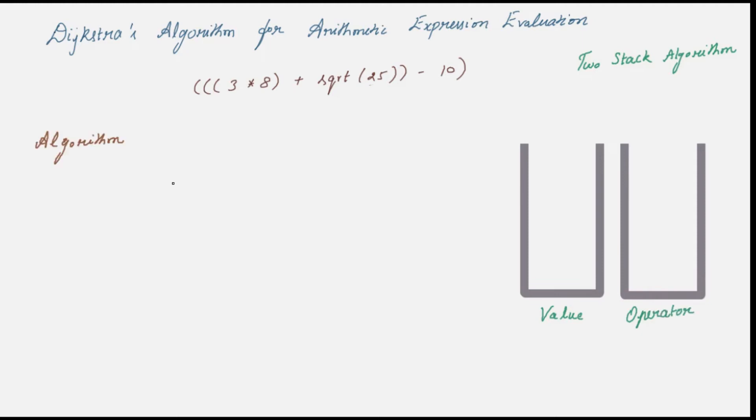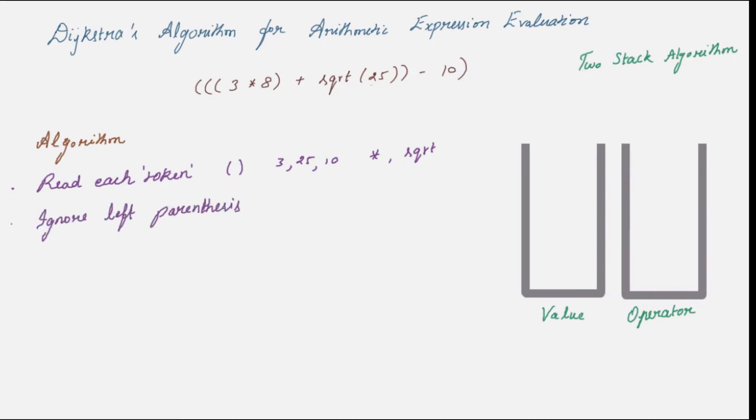Let's see the logic behind the algorithm. Read each token in the input expression. Here by token we mean each of the entries. It could either be the parenthesis left or right, or it could be any numerical value like 3, 25, or 10, or it could even be the operators like multiplication symbol or square root. While you read each token, if you encounter a left parenthesis just ignore it. Left parenthesis only denotes the beginning of a sub-expression so we don't have to do anything when you encounter that.